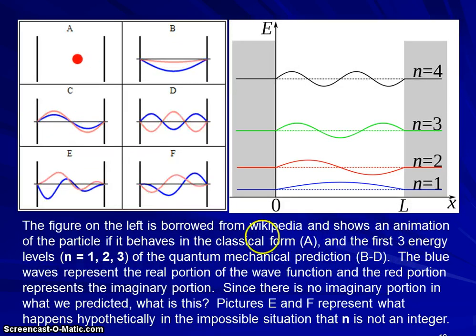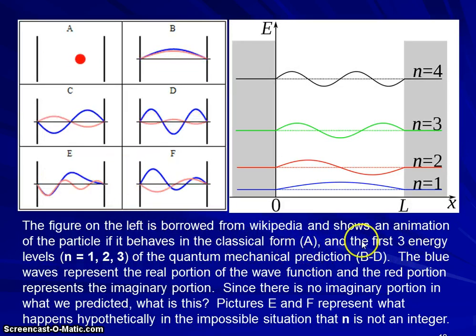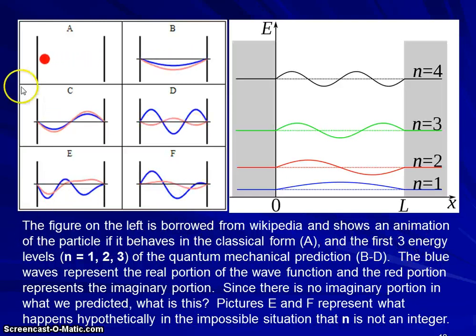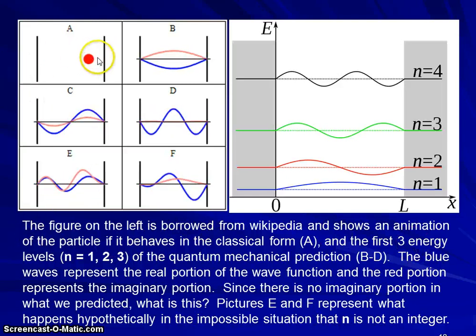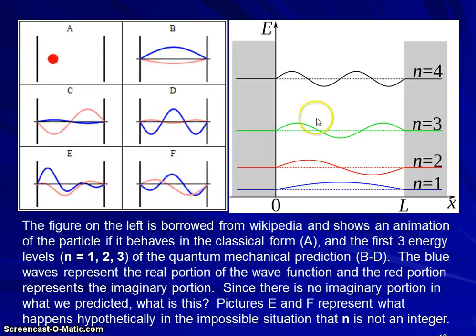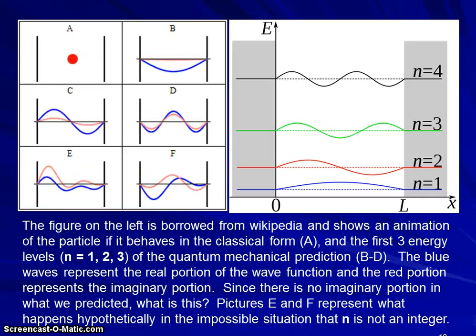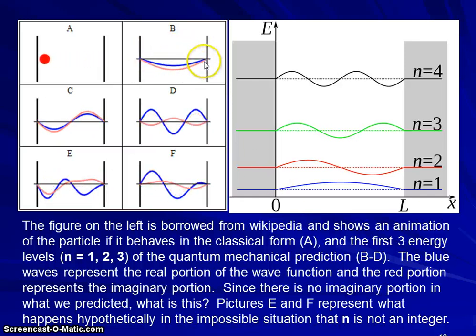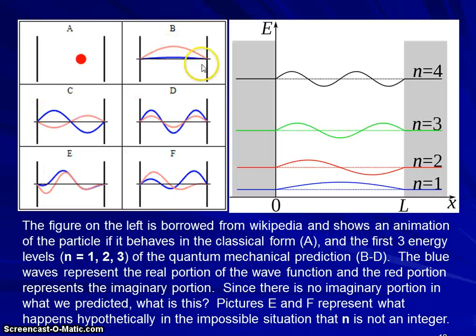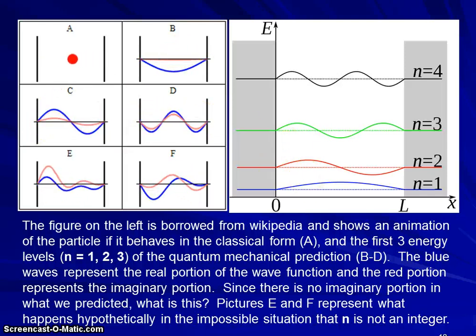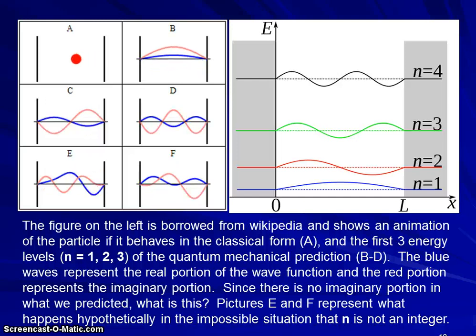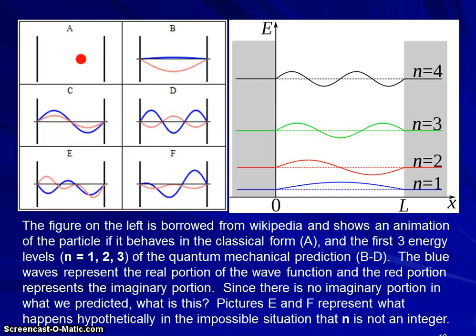What we have here is some neat pictures and videos that I borrowed from Wikipedia showing an animation of the particle as it behaves in the classical form and in the first three energy levels of the quantum mechanical prediction. Notice that the wave function is always such that it's going to zero at the ends of the box. We've got a half wavelength, we've got a full wavelength, we've got three halves of a wavelength - we always have a whole number of half wavelengths in the box.